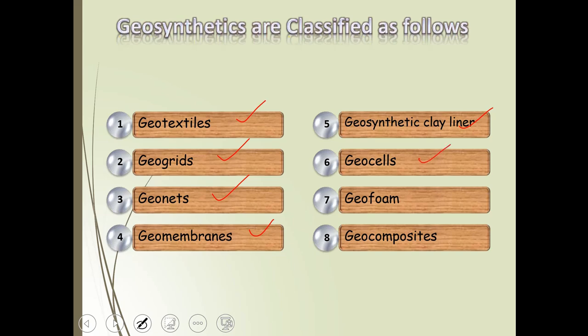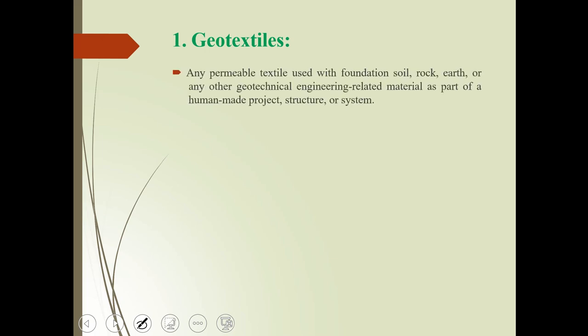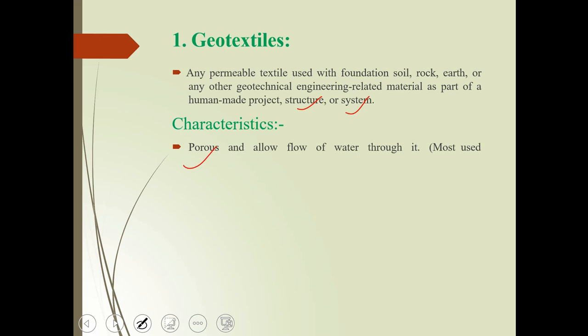First, geotextiles. This is a permeable textile used with foundation soil, rock, earth, or any other geotechnical engineering-related material as part of a man-made project structure or system. If we talk about the characteristics of geotextile, it is porous and allows the flow of water through it.